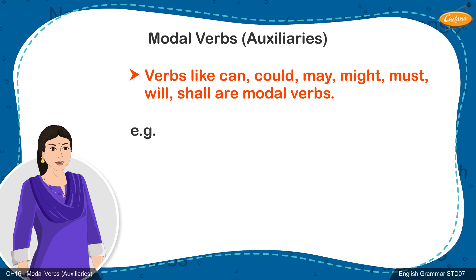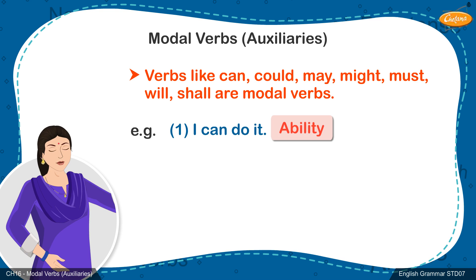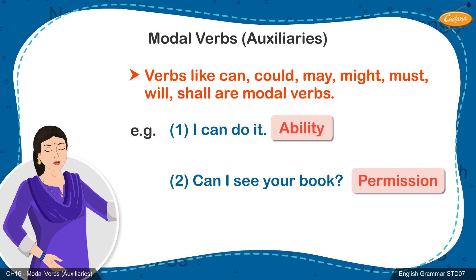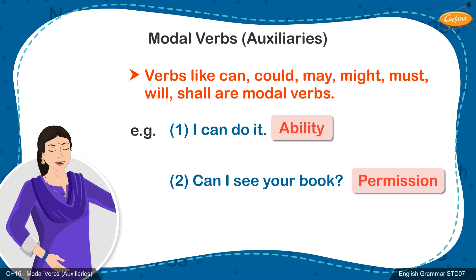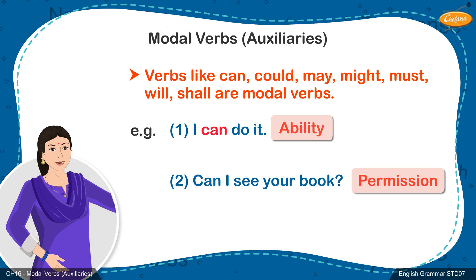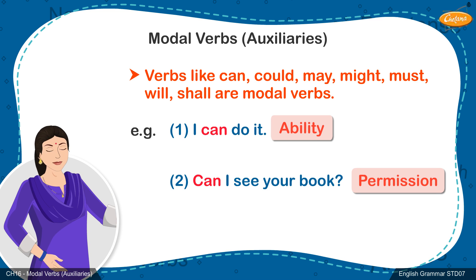Example 1: 'I can do it.' — Ability. Example 2: 'Can I see your book?' — Permission. In sentence 1, the modal auxiliary 'can' is used to express ability, whereas in sentence 2, 'can' is used to show permission.